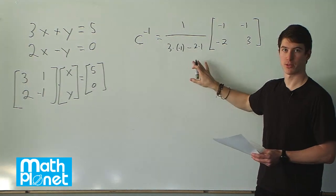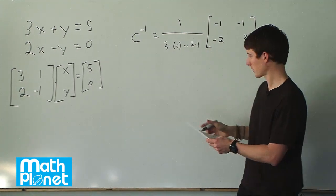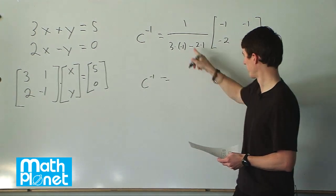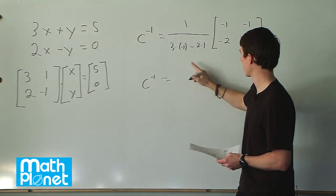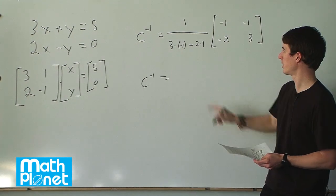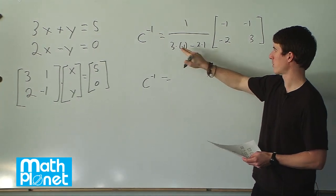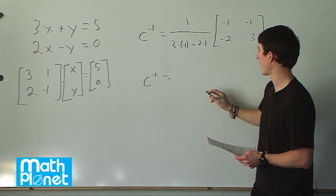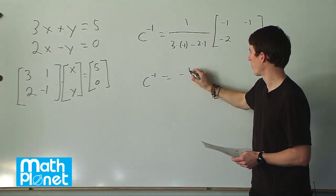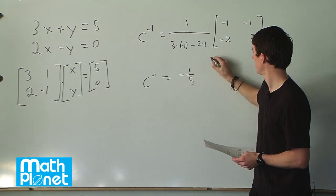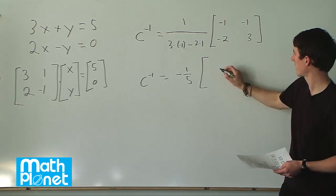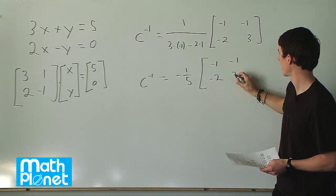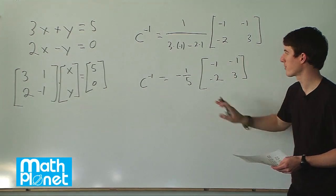Let's simplify this a little bit. The coefficient matrix is now 1 divided by — so we have 3 times negative 1 minus 2 times 1, which is negative 3 minus 2, giving us negative 5. So it's negative one-fifth times the matrix: negative 1, negative 1, negative 2, and 3. So we have the coefficient matrix.